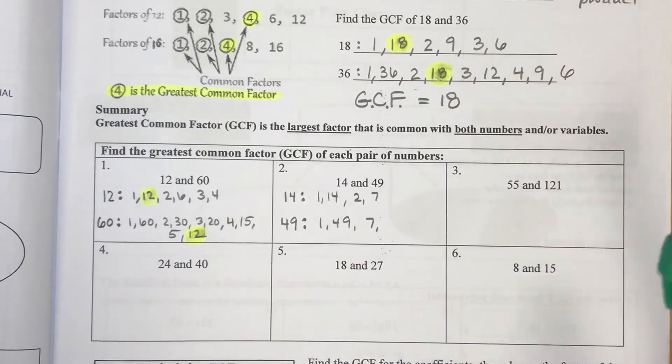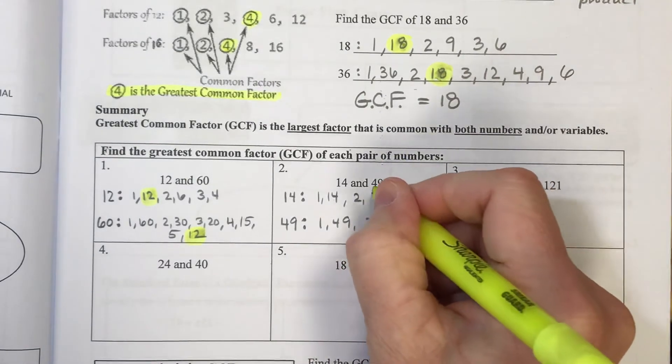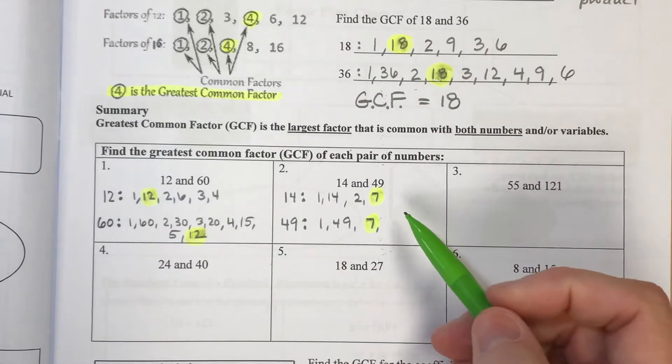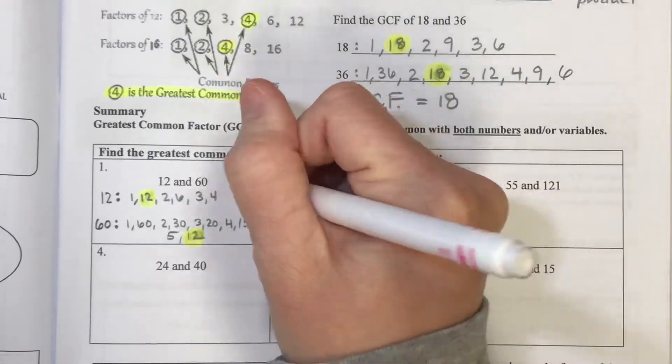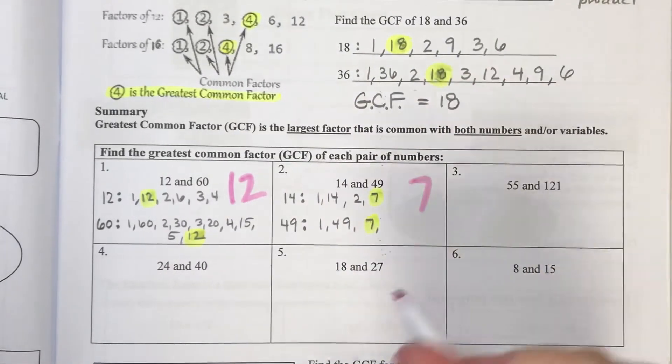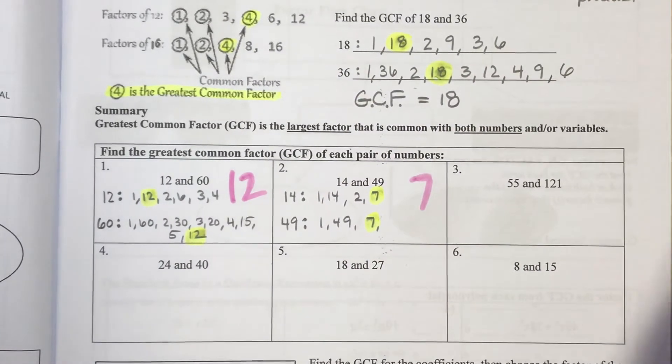And I don't need to list the 7 twice. I just need it once. And so 7 is the greatest common factor of those two. And actually, what I'll do is I'll write this kind of in marker, our greatest common factor larger than that.